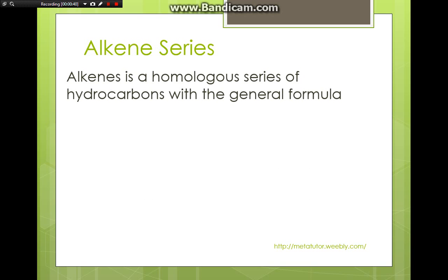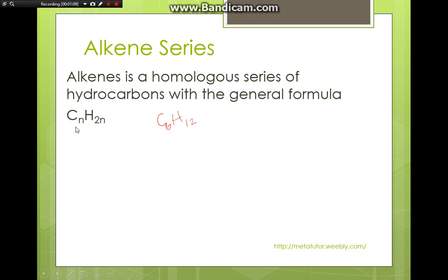Alkenes are hydrocarbons. The simplest alkenes have the general formula CnH2n. So for example, if an alkene has 6 carbons, we will expect it to have 12 hydrogen atoms in that molecule. This is limited to alkenes that have only one double bond. If the alkene has more than one double bond, this formula doesn't apply.